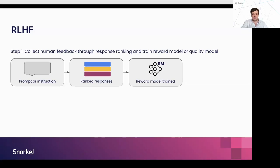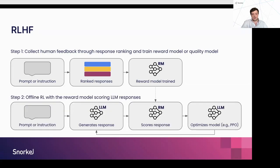The reward model is typically smaller than the LLM you want to train, but for an instruction and a given response, it assigns a scalar score or binary feedback. In the offline reinforcement learning pipeline, we actually change the LLM's weights: the LLM generates a response, we score it with the reward model, and optimize using PPO, iteratively. The LLM updates over time while the reward model is frozen, and we converge on a model better aligned with whatever quality metrics we've instilled in the reward model.